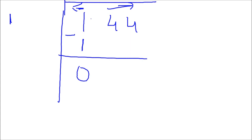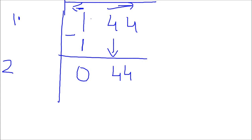Now double the previous guessed number: 2 times 1 gives me 2. After doubling, bring the second pair down. Keep in mind that this pair was the first one to the right of the decimal, so I'll place the decimal point here as well.